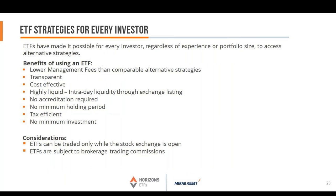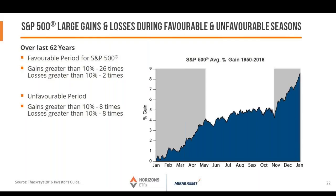Here's another chart summarizing the S&P 500 large gains and losses during favorable and unfavorable seasons. Over the last 62 years, the favorable period had gains greater than 10% twenty-six times and losses greater than 10% only twice. The unfavorable period had gains greater than 10% eight times and losses greater than 10% eight times. That gives you a broader picture of how this has worked over 62 years — quite compelling.